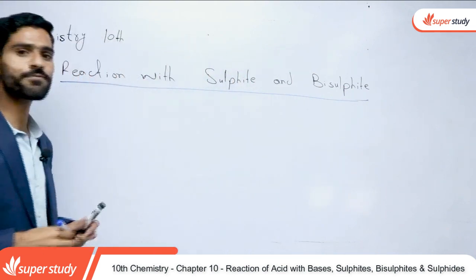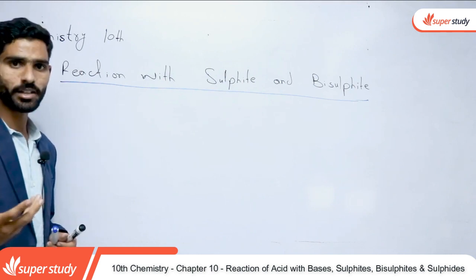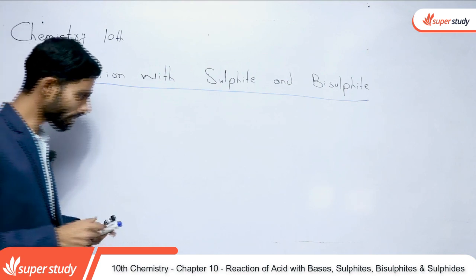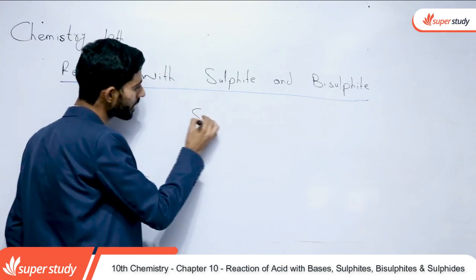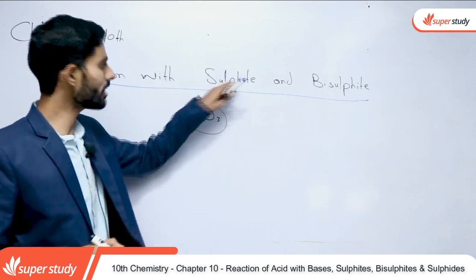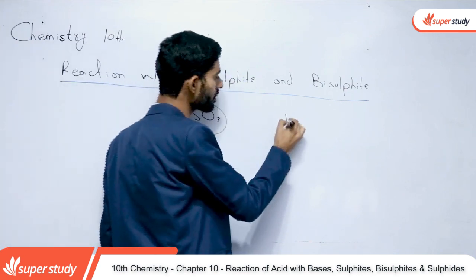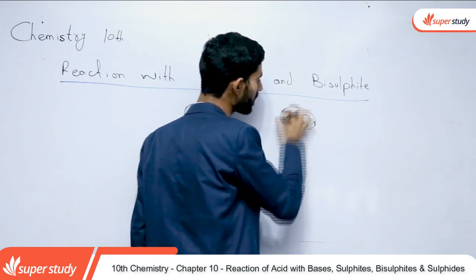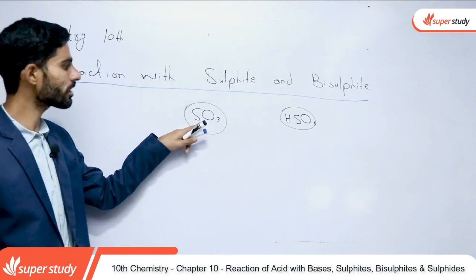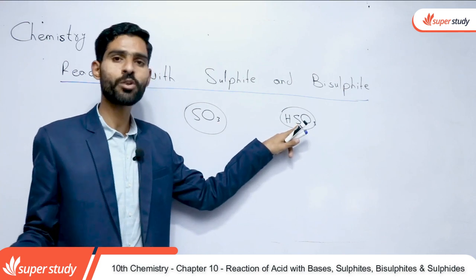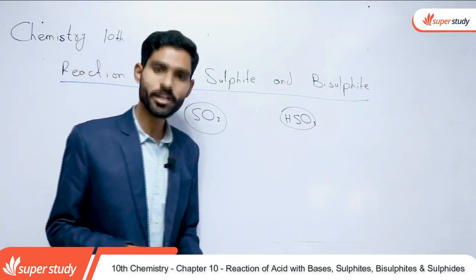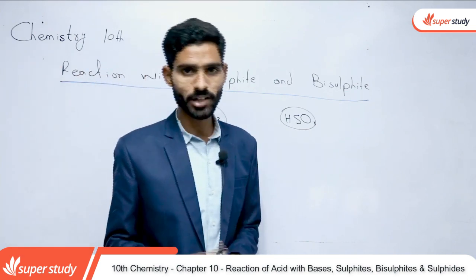Pehle hume batana chahiye ki sulfide term kya hai. Jab bhi kisi compound ke andar SO₃ nazar aaye, to yeh indication hai sulfide ki. Aur jab bhi kisi compound ke andar HSO₃ nazar aaye, to yeh indication hai bisulfide ki. Aise compound ko hum bisulfide kahenge.